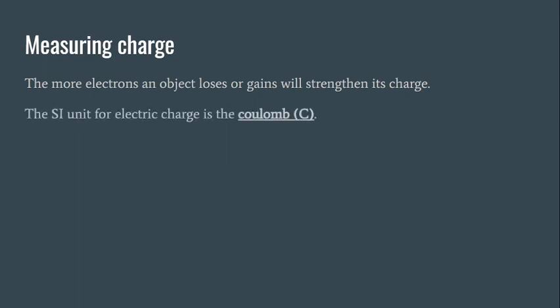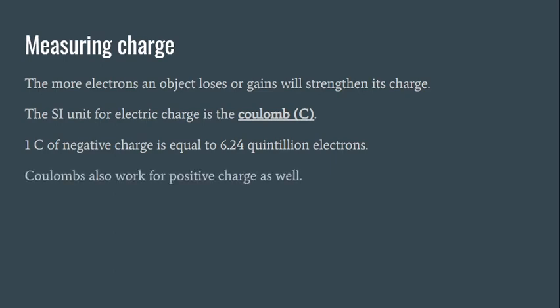The SI unit for electric charge is called the coulomb, and we represent it with this capital C. This is named after a person that we're going to get into a little bit later. But for right now, what you need to know is that it is the coulomb, and that is how we measure our electrical charge. One coulomb of negative charge is equal to 6.24 quintillion electrons. That's a whole lot of electrons. We talk about negative charge, but it works for positive charge as well. Coulombs also work for positive charges.